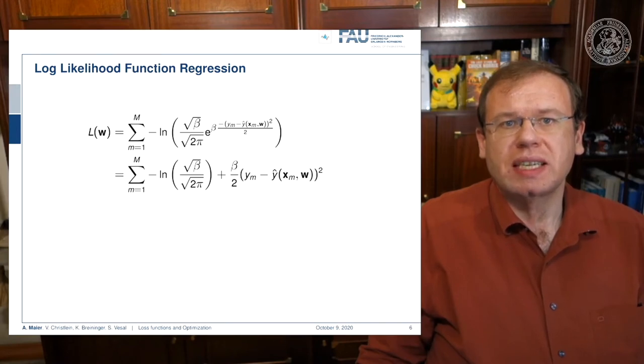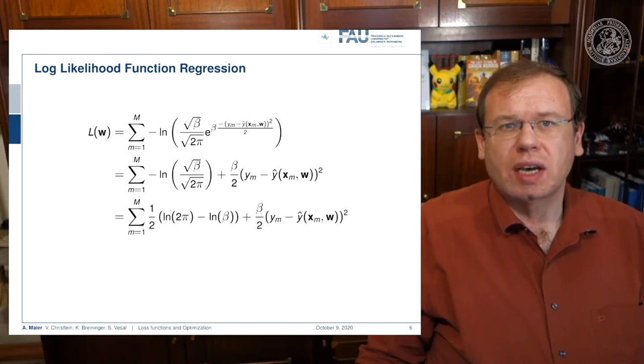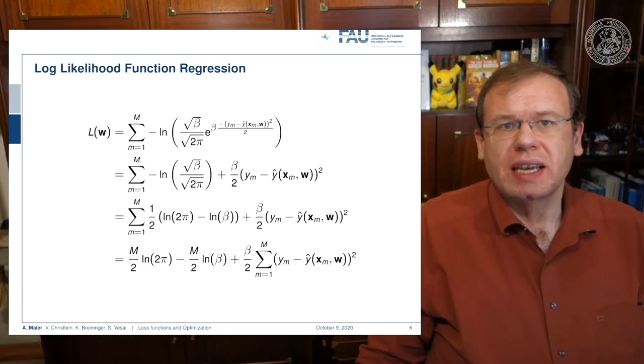If we do so, you will see that we can use the logarithm. It comes in very handy because it allows us to split the product. The logarithm cancels out with the exponential function, giving us beta over 2 times y subscript m minus y hat to the power of 2. We can simplify the first term further by applying the logarithm and pulling out the square root 2 pi. Then we can see that the sum over the first two terms doesn't depend on m, so we can multiply it by capital M to get rid of the sum and move the sum only to the last term.